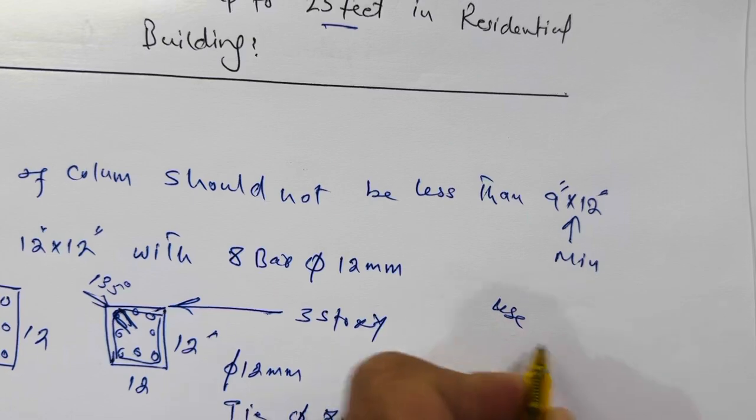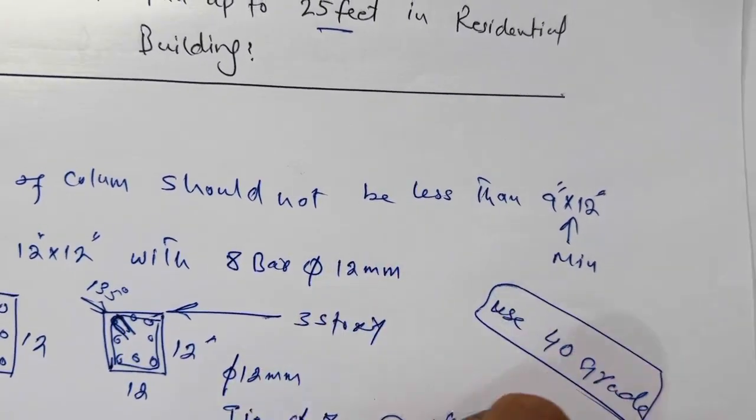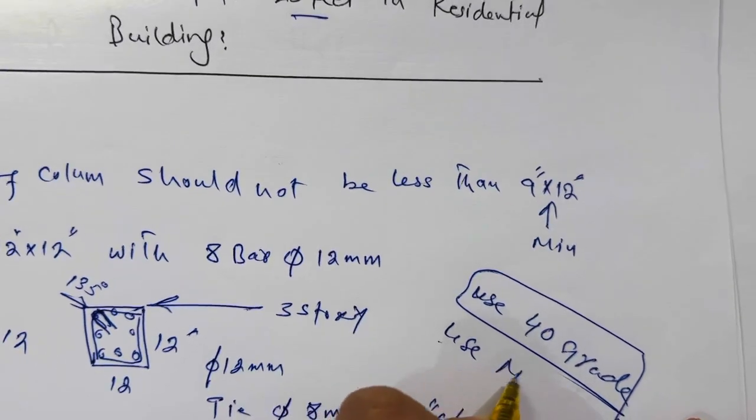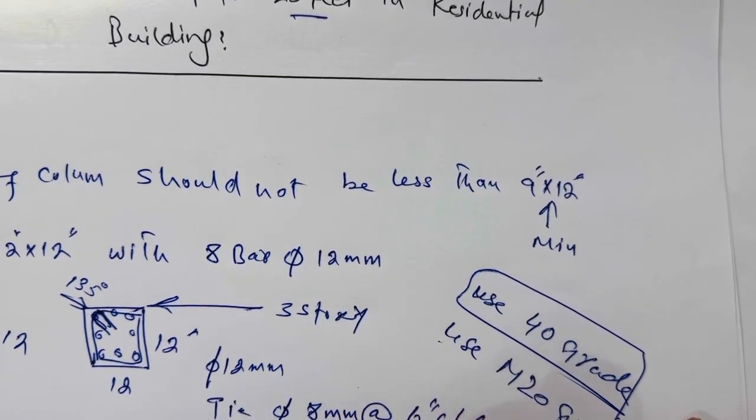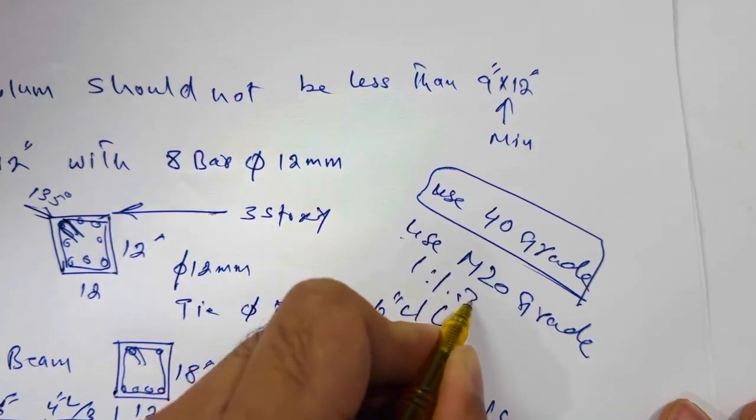Use 40 grade steel rod and use also M20 grade concrete, which ratio is 1 ratio 1.5 ratio 3.